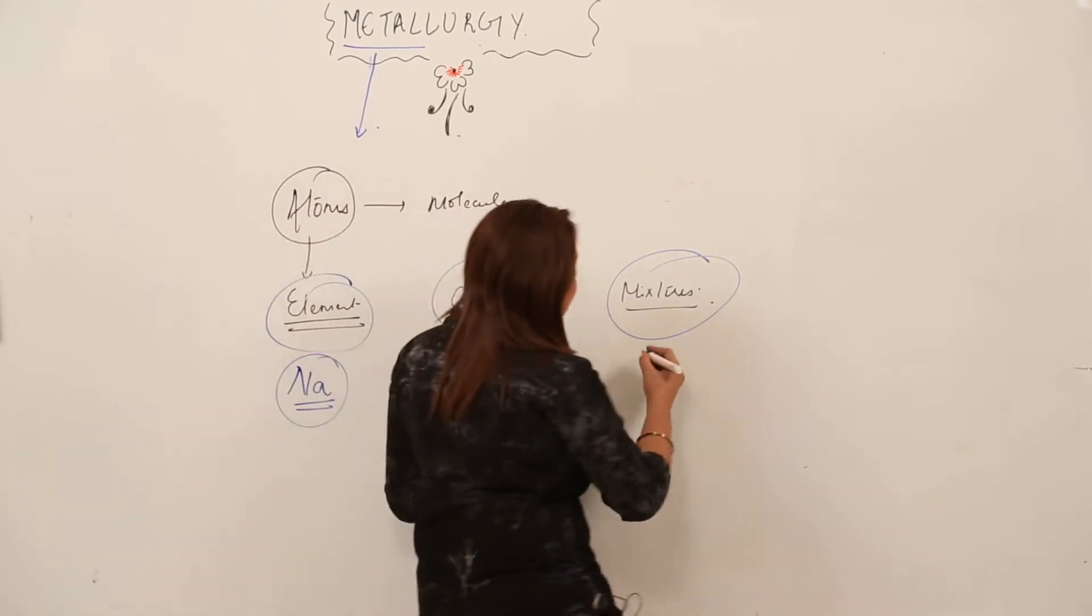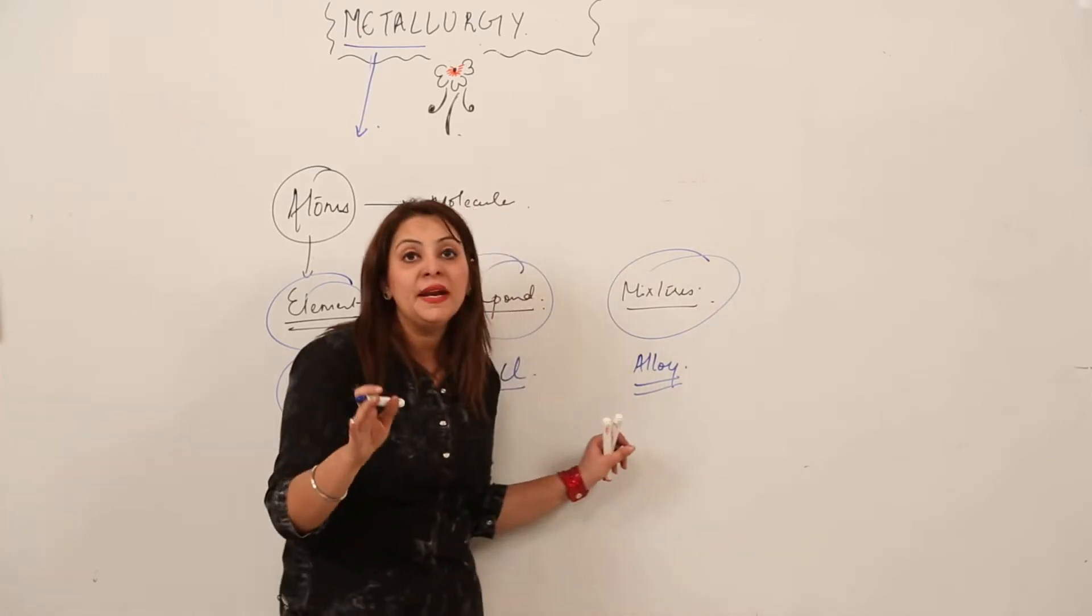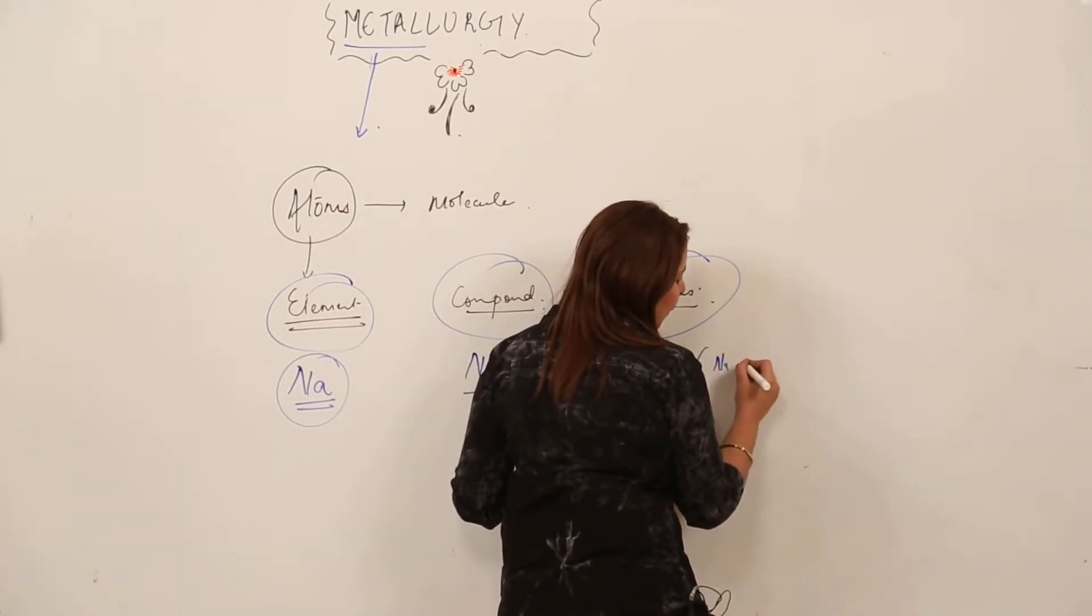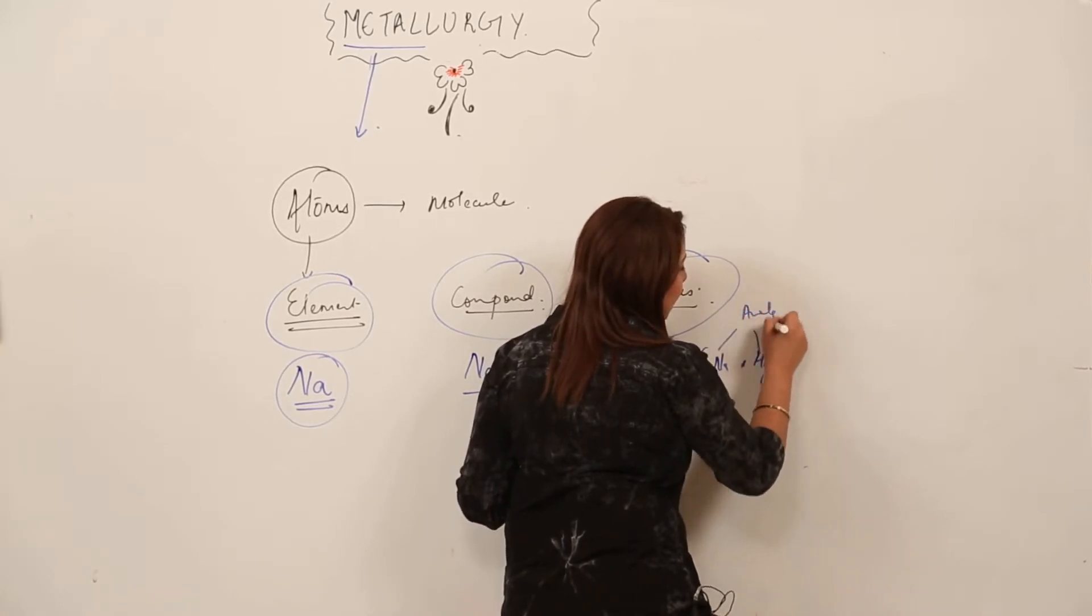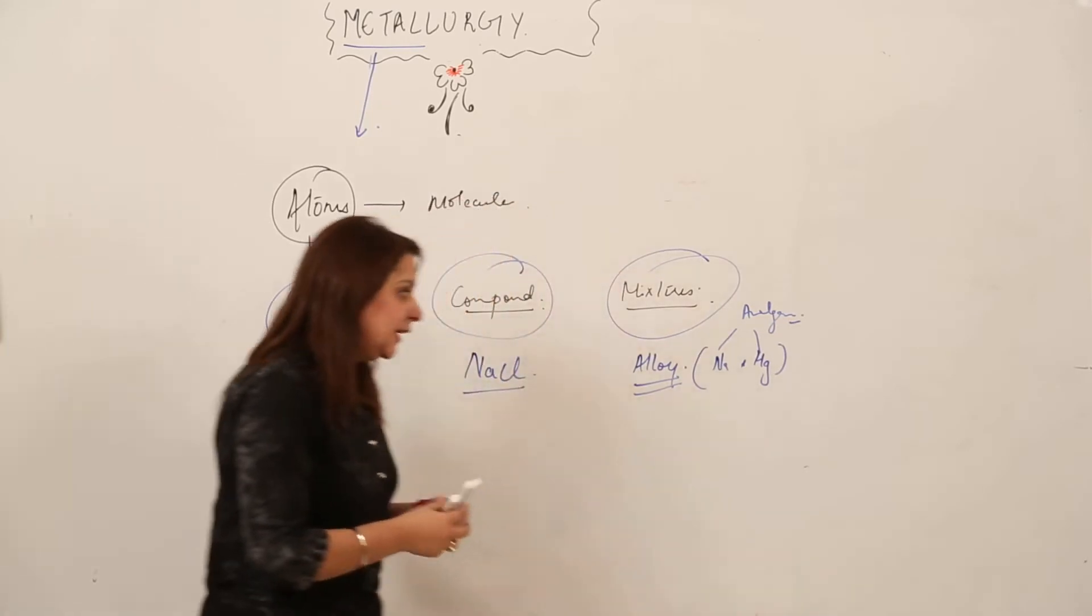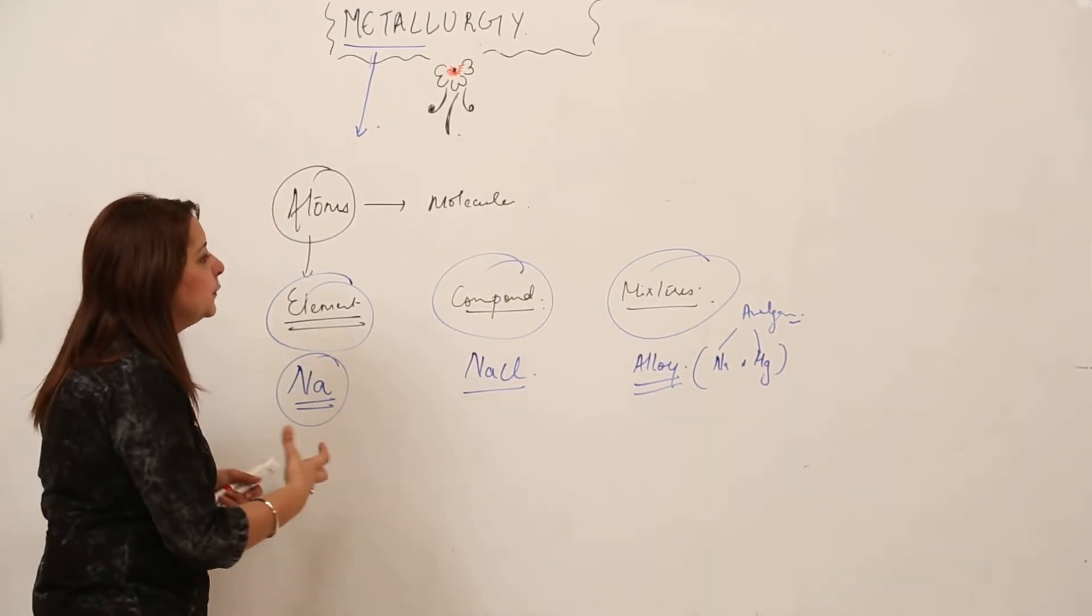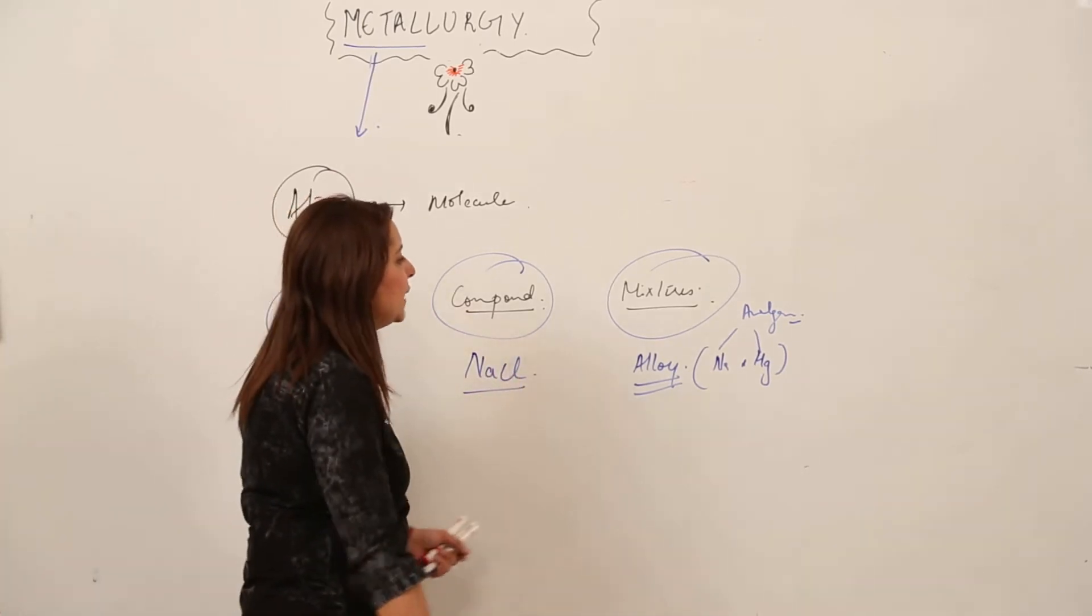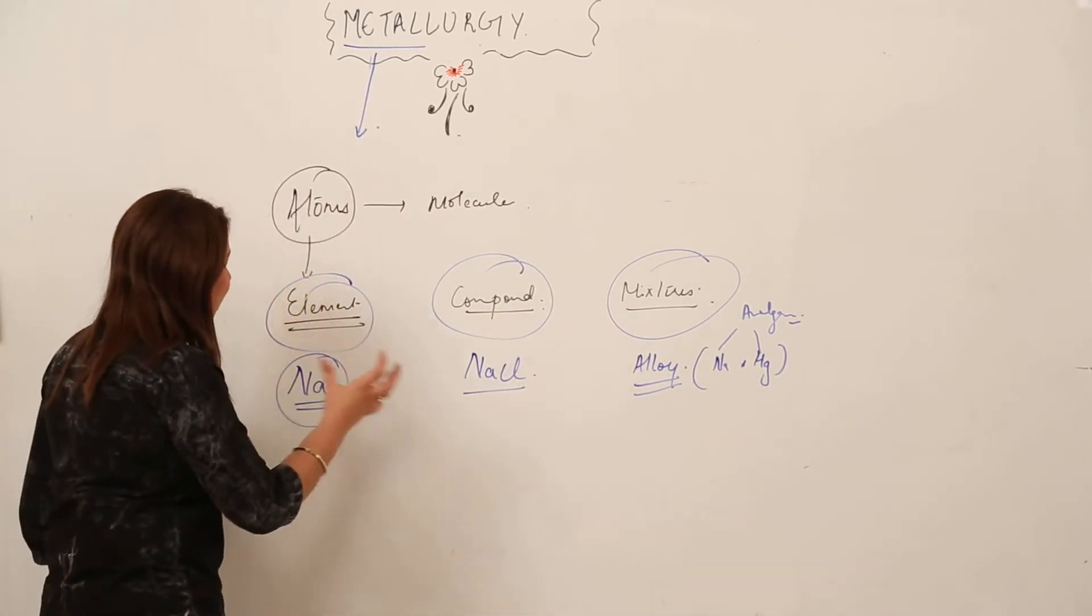And mixtures - suppose I have an example of alloy. It is again made up of metal. An alloy in which small amount of sodium is mixed with mercury to form alloy, that is amalgam. Here we are encountering different terms. You should know what actually the element is, what actually the compound is, what actually the mixture is.